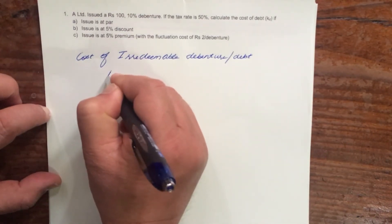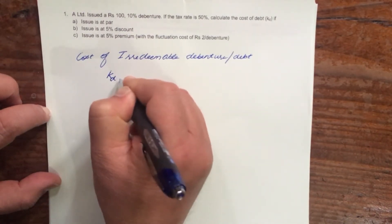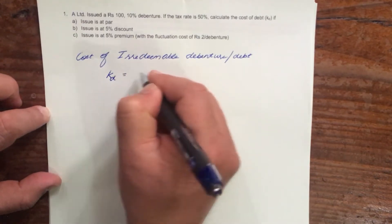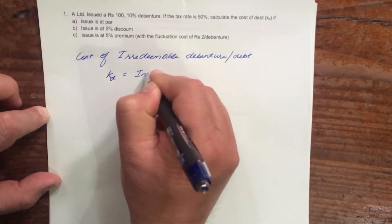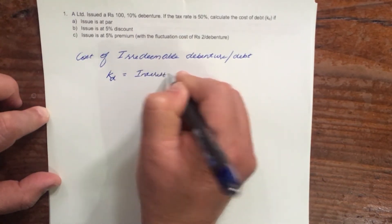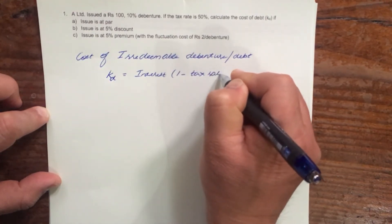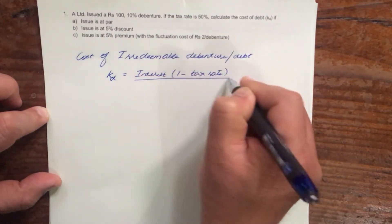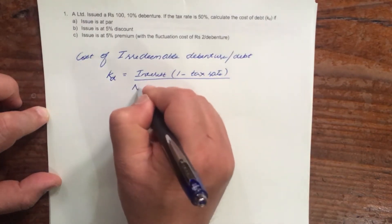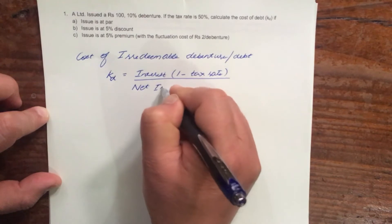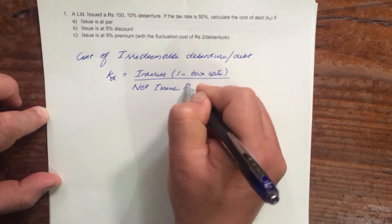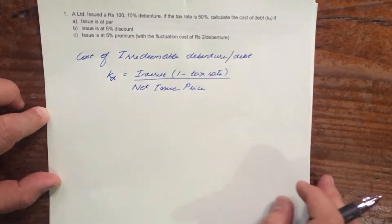So how will you find it out? It is denoted by Kd = Interest × (1 - Tax Rate) / Net Issue Price. Let us look at this problem.